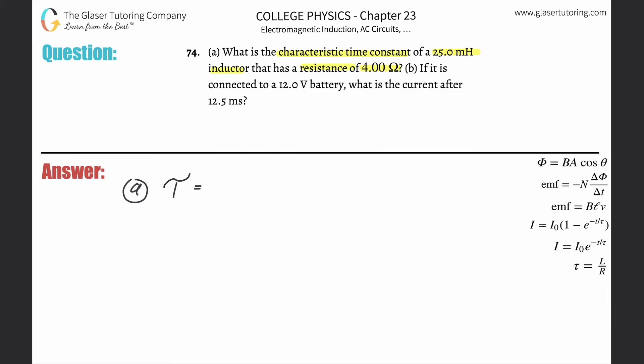Time constant here for an RL circuit is going to be equal to the inductance divided by the resistance. So I need to know the two. The inductance is always measured in Henrys. They told us millihenry, but we're going to need that in Henrys. So simply take the 25 and multiply it by 10 to the minus 3.